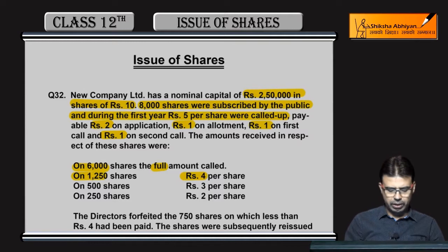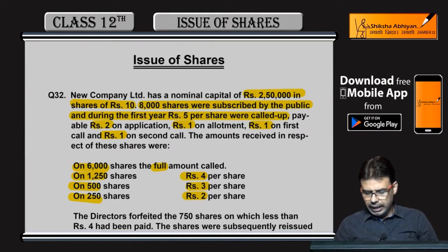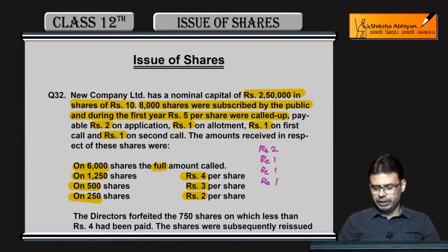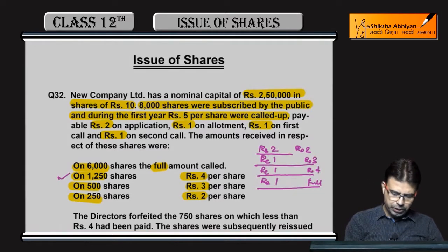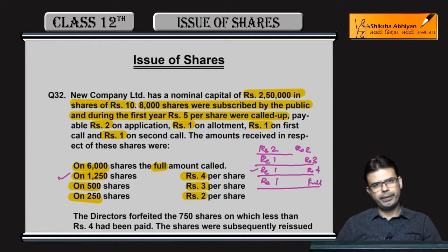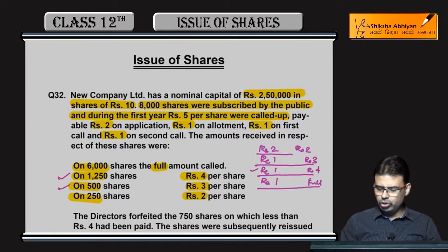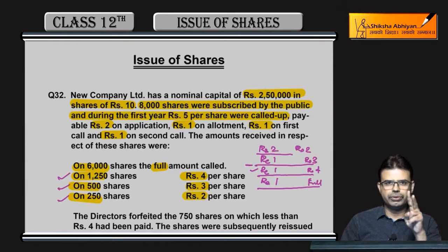Breaking down the share groups: 1,250 shares paid 4 rupees; 500 shares paid 3 rupees; 250 shares paid 2 rupees. For the 6,000 full-payment shares: application 2 rupees, allotment 1 rupee, first call 1 rupee, second call 1 rupee — full 5 rupees. For 500 shares: application 2, allotment 1, first call — 3 rupees total. For 250 shares: only application — 2 rupees total. For 1,250 shares: up to first call — 4 rupees. Second call brings full 5 rupees for complete group.